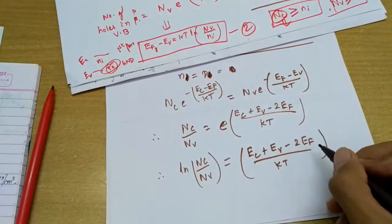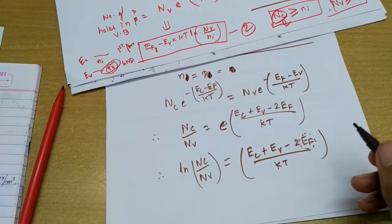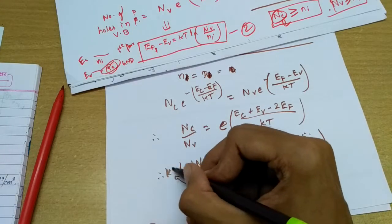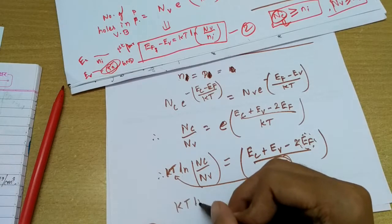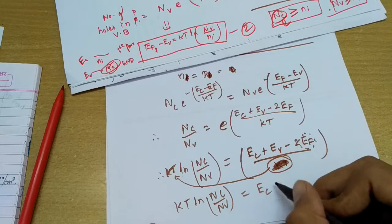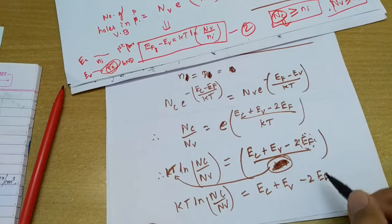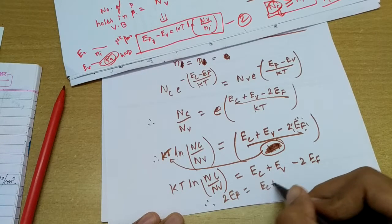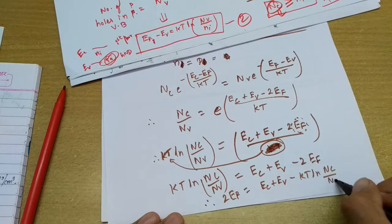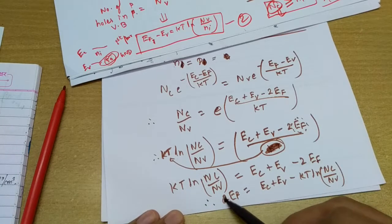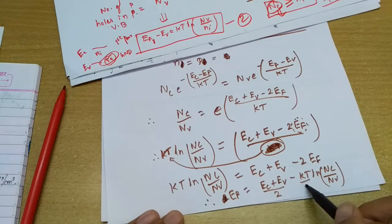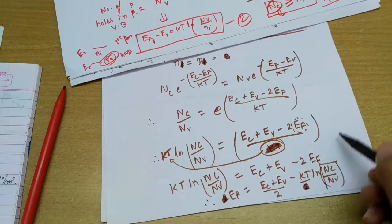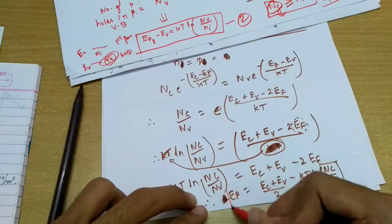Bringing kT to the other side: kT·ln(nc/nv) = Ec + Ev - 2Ef. Making Ef the subject: 2Ef = Ec + Ev - kT·ln(nc/nv). Dividing by 2, and bringing the factor of 1/2 inside the log as a square root, we get the expression for efi.